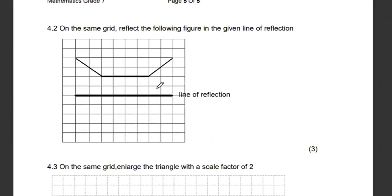Then 4.2, they want us on the same grid to reflect this line. A reflection, all we need to remember is that distance needs to be the same. We have two blocks from the mirror line or the line of reflection, which means we must also have two blocks this side. Then we draw that line. And then follow two blocks that side, use your ruler, and then two blocks this side. So we have this as our reflection.